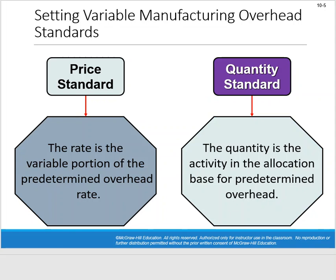Even for variable manufacturing overhead, we have price and quantity standards. The book sometimes calls these a rate standard and an hours standard. The price standard is the variable portion of the predetermined overhead rate, and the quantity is the activity in the allocation base for the predetermined overhead rate. This all ties to computing the predetermined overhead rate, which we'll revisit shortly.